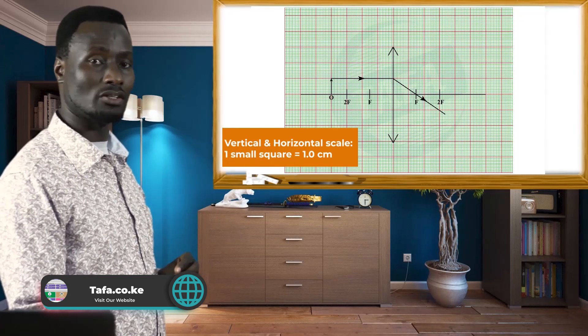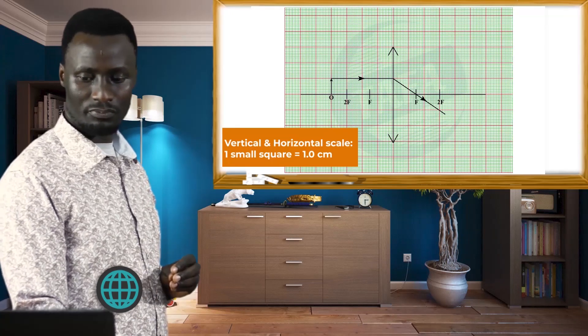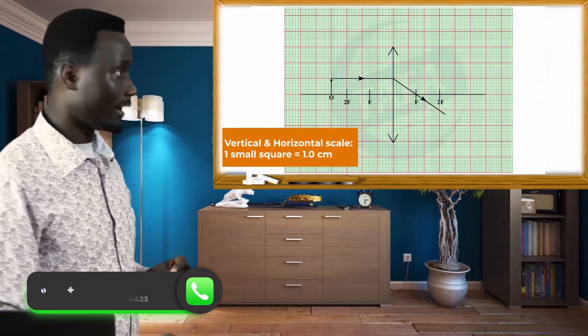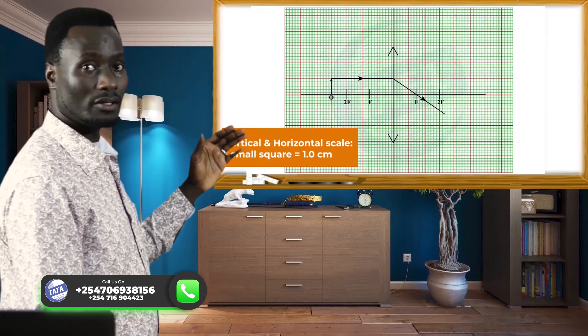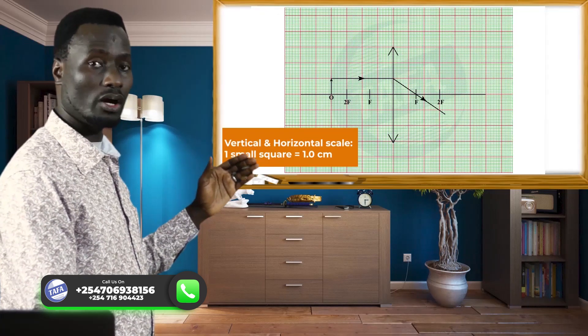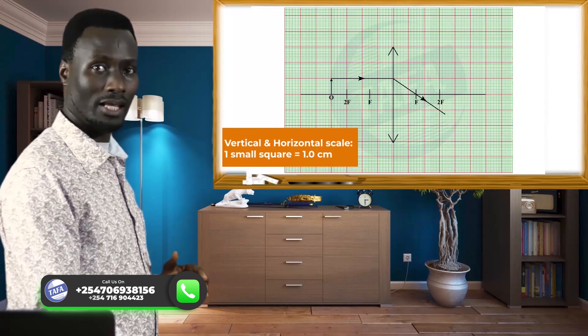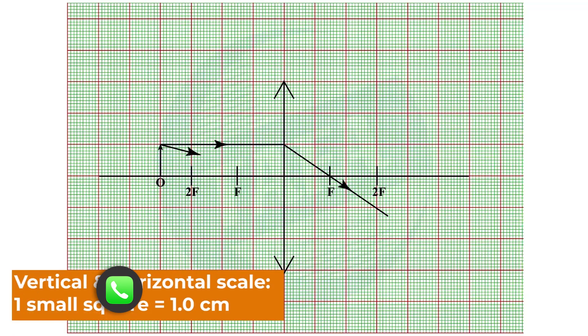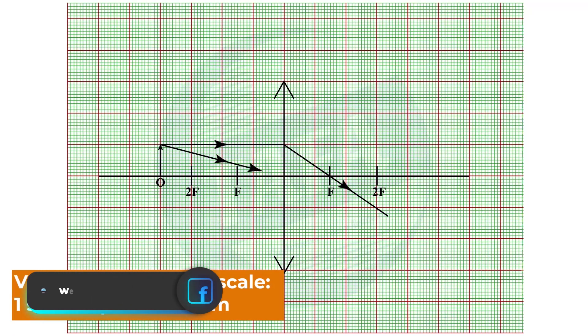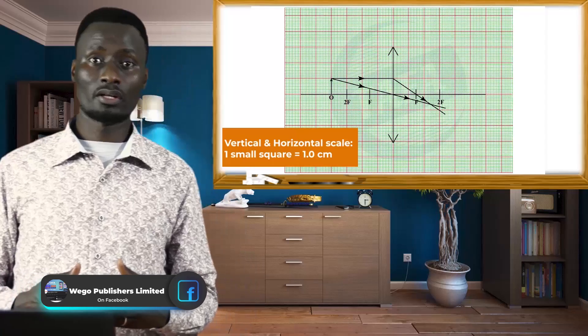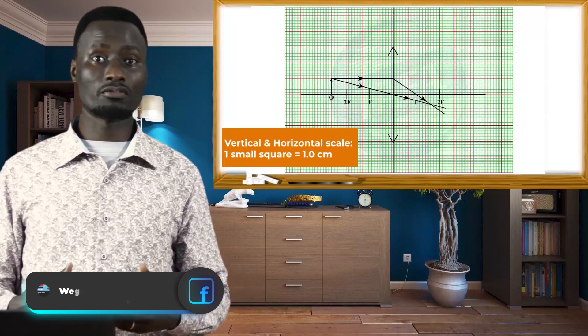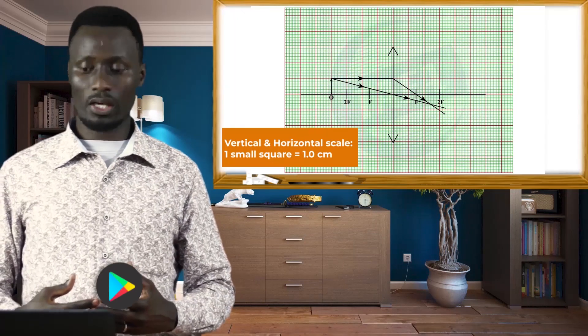Another ray is a ray that passes through the optical center of the lens. This ray passes undeviated, and where the two rays intersect, that is where the tip of the image is.